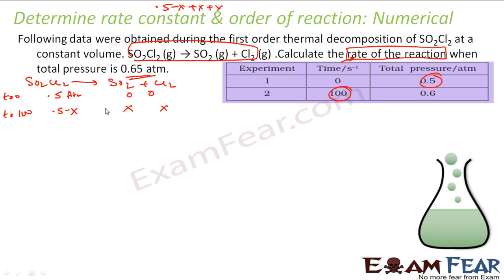That total pressure value is given as 0.6 atm. Solving: X = 0.6 − 0.5 = 0.1 atm. So SO2 = 0.1 atm, Cl2 = 0.1 atm, and SO2Cl2 = 0.5 − 0.1 = 0.4 atm.